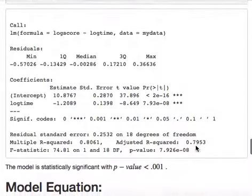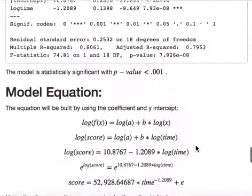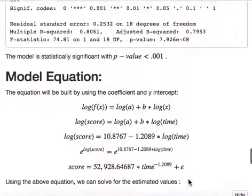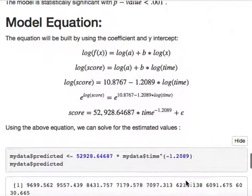The equation can now be derived using the coefficient and intercept values. Using the equation, we can then find out the predicted score and graph the data again.